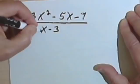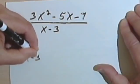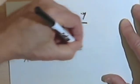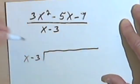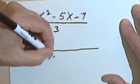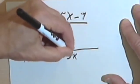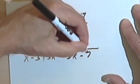So I'm going to take the divisor, the denominator, and write x - 3, and then I'm going to make one of these division boxes. And in that I'll put in my numerator, 3x² - 5x - 7.